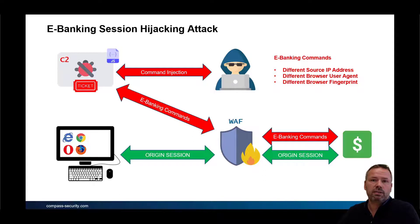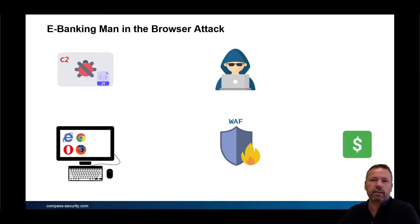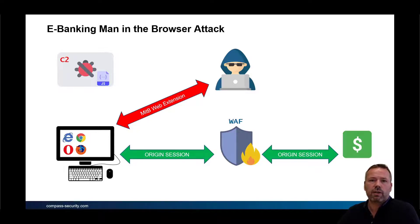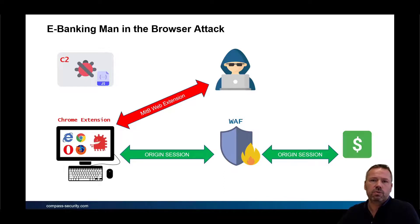To bypass this limitation and to bypass the need for a vulnerability on the e-banking side, there is a modern attack called the man-in-the-browser attack. I created a research project and built a malicious Chrome web extension. Let's assume again we have a victim connected to the e-banking site and the attacker could install this malicious Chrome extension into the victim's browser. The installation does not require any local admin privileges. It runs with the same privileges as the user installing the extension, and once this Trojan horse is installed, it starts polling the C2 server for commands.